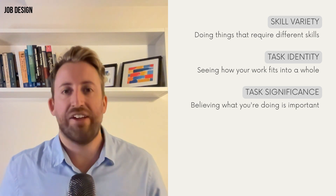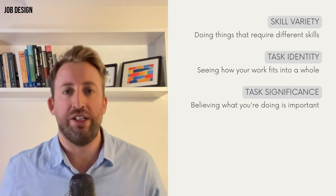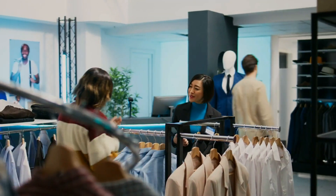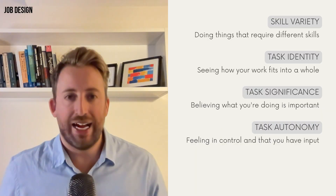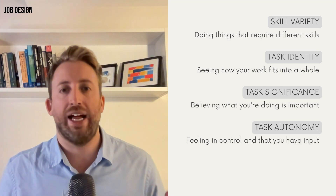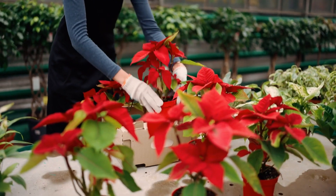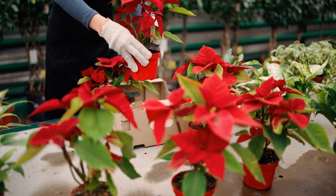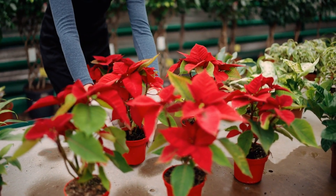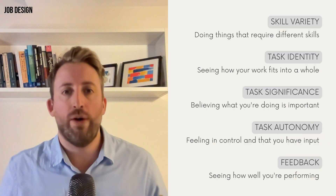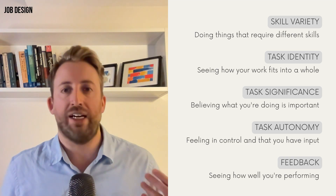The third is task significance — believing what you're doing is important and useful, such as helping shoppers find the perfect outfit because everyone wants to look great and feel great. Next is task autonomy: feeling in control and having input in what you're doing — for example, deciding on the best way to arrange merchandise displays and having the chance to unleash your creativity. The final characteristic is feedback — knowing how well you're performing so you can make adjustments, such as receiving praise from customers or constructive feedback from a manager.